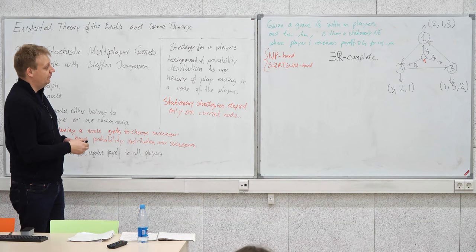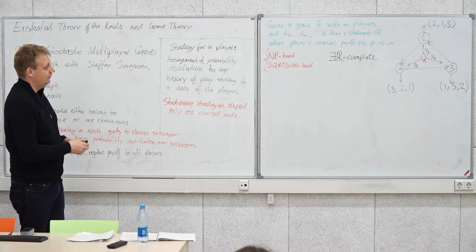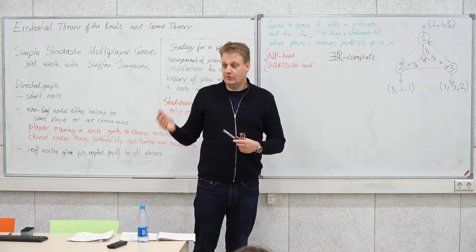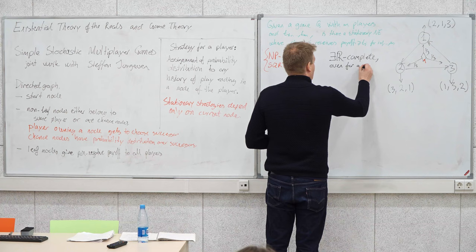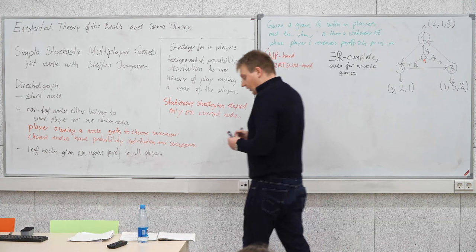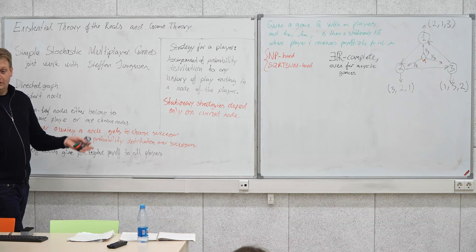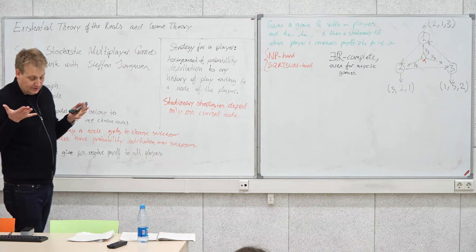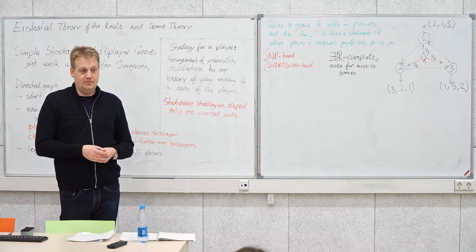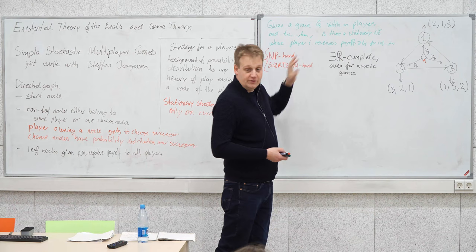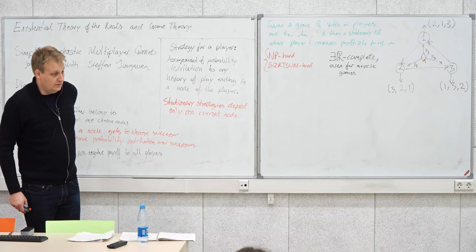I'll construct a game where this problem is complete for the existential theory of the reals, and it is complete even for acyclic games — meaning the graph is acyclic. One nice property of acyclic games is that we are guaranteed existence of a Nash equilibrium, which follows from backwards induction starting from leaf nodes.